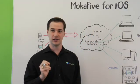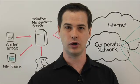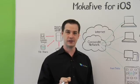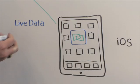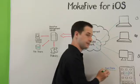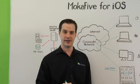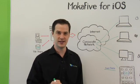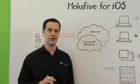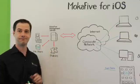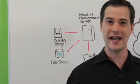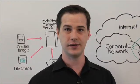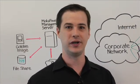But instead of delivering a clunky Windows desktop, we deliver the corporate data to a secure container on the iOS device. This container is called LiveData, and it's completely secure. All data is encrypted and wrapped with more than 30 security policies that you control on the central management console. In the LiveData container, you can access any internal corporate resources, including SharePoint, home directories, and file shares, and you don't need a VPN.